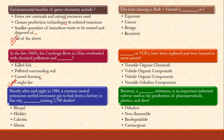Shortly after midnight in 1984, a reaction caused poisonous methyl isocyanate gas to leak from a factory in the city, causing around 3,700 deaths. We cannot forget — it was India — and that is the Bhopal gas tragedy. Methyl isocyanate gas was the substance that leaked.